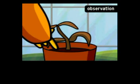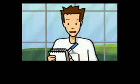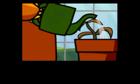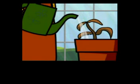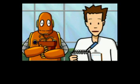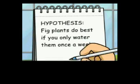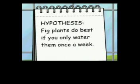Right now we need to make some observations about the plant. The leaves are brown and falling off, and the soil is wet and squishy. Next we make an inference. An inference is a conclusion about our observations. From what we've observed, we can infer that Moby is watering his plant too much.